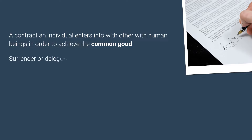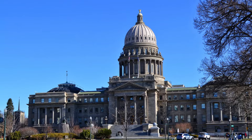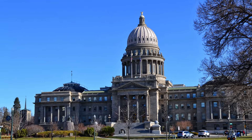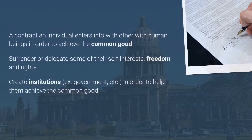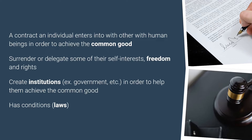In doing so, they surrender or delegate some of their self-interests, freedom and rights, and create institutions such as the government, police, hospitals, etc., in order to help them achieve the common good. Just like any contract, the social contract also has conditions — these are society's laws, which the contracting parties are expected to observe. Observance of these laws helps promote the common good, while non-observance results in punishment by the tasked social institutions.